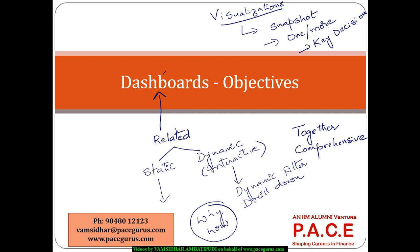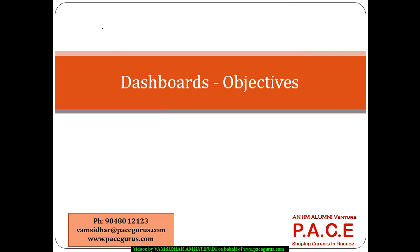So, when we take up a few examples, that is what we are going to look at. But, before we take up the examples, we have to really understand what are the different kinds of objectives. What are the different kinds of objectives that are typically accomplished by the dashboard?